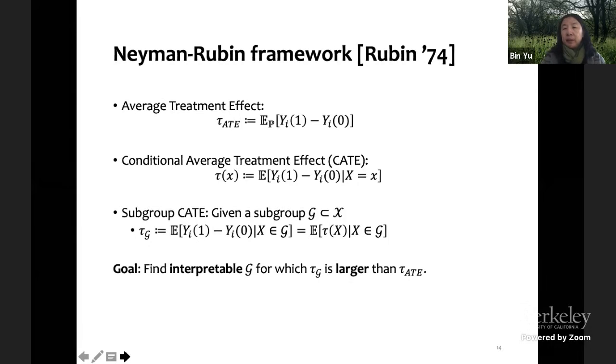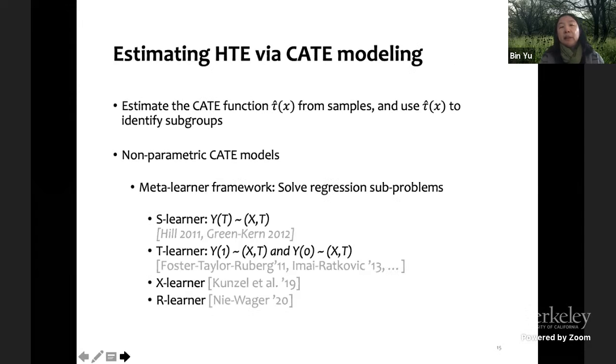You condition on a particular covariate and look at the average treatment effect for that group. There has been a lot of research recently, including people from Berkeley and now work with Jessica and Peter Pickle and our joint student, Kuzang, we devised X-Learner. Before us, people already have S-Learner using basically borrowing machine learning from the supervised learning. There's also R-Learner from Stanford and there's tree learner.